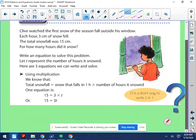It then tells us to write an equation to solve this problem. Let T represent the number of hours it snowed. Here are three equations we can write and solve. We can first of all use multiplication. We know that the total snowfall, which was 15 centimeters, equals the snow that falls in one hour multiplied by the number of hours it snowed. So we can say that 15 equals 3 times T.